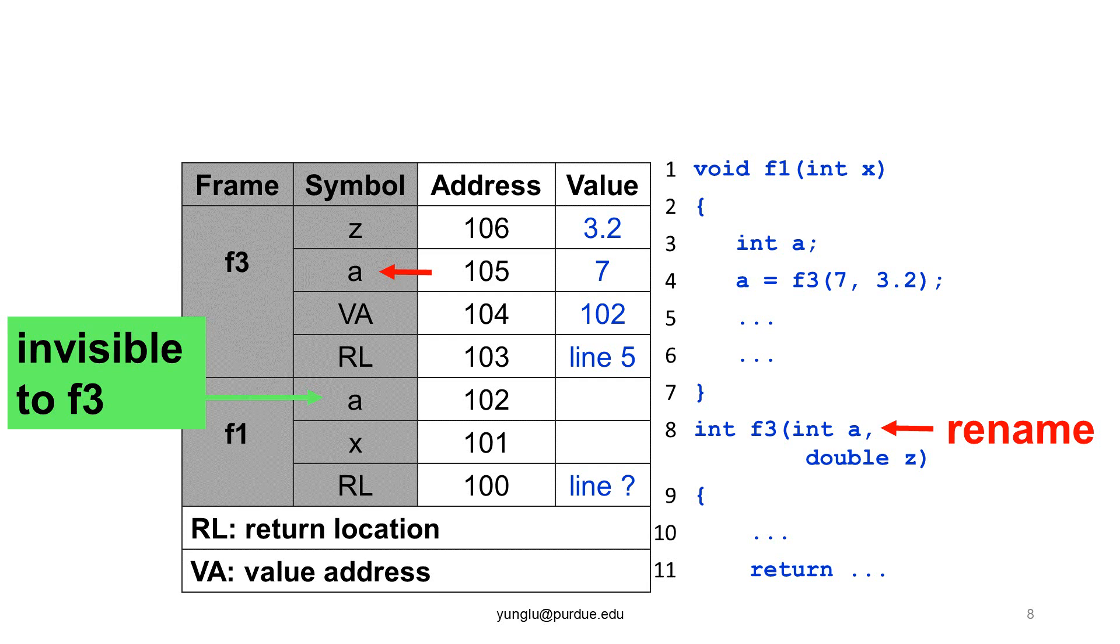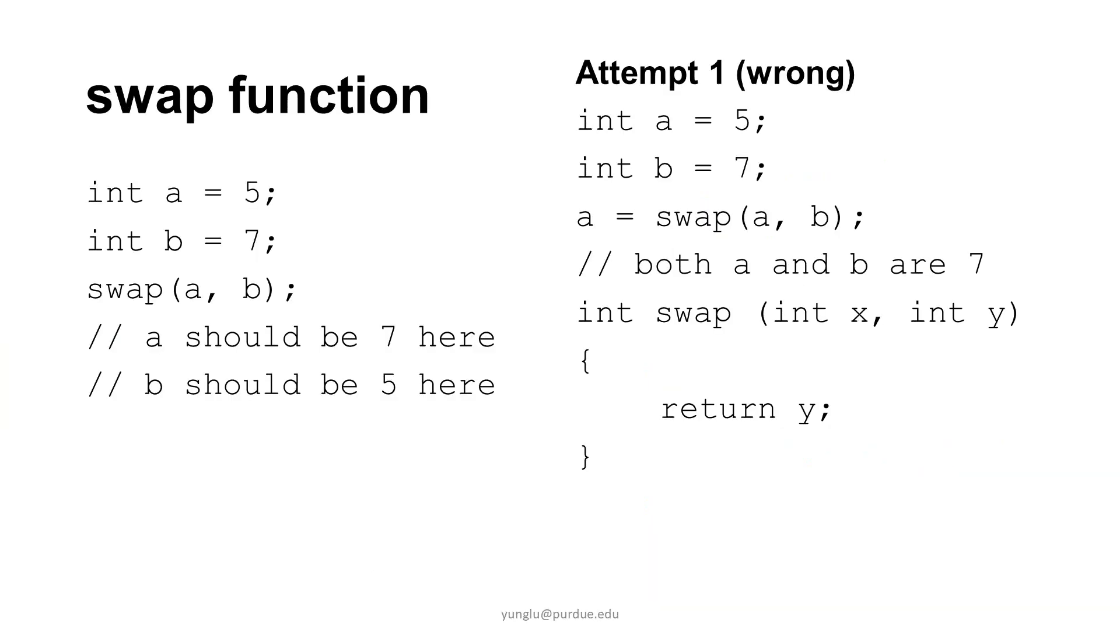This will cause serious problems and make some problems very difficult to solve. Let's consider writing a swap function. The swap function takes two input arguments. After the function call, the two arguments' values are swapped. This is an example. Suppose a is 5 and b is 7. After calling the swap function, a should be 7 and b should be 5.